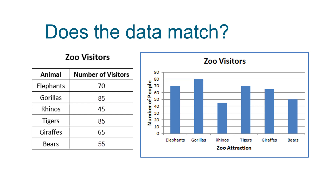Does the data in this table match the data in the bar graph? These data sets do not match either. I can see that in the table there are 85 visitors to the tigers, but according to the bar graph there were only 70. And in the table it says that 55 people visited the bears, but on the bar graph I can see that 50 visited the bears. These two data sets do not match.